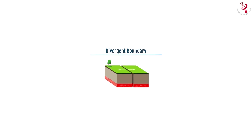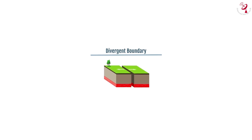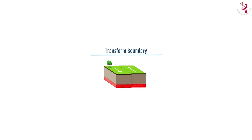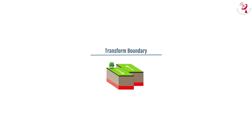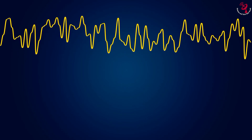Divergent boundary occurs when two plates are spreading apart. Molten rock rises from the Earth's center to fill the gap. Transform boundary marks slip-sliding plates. The plates do not slide smoothly, but build tension, and release it in the form of an earthquake.